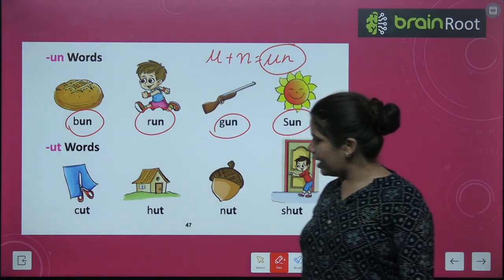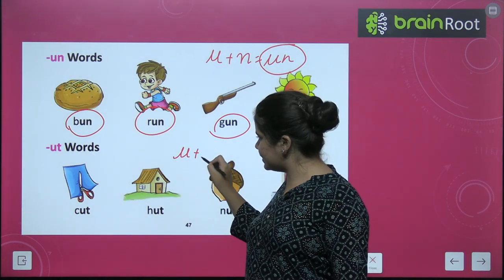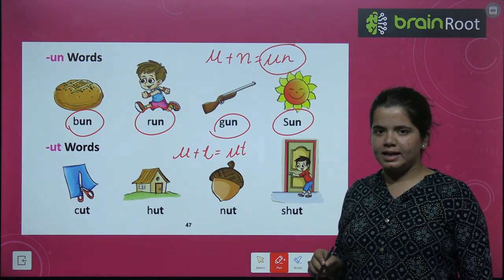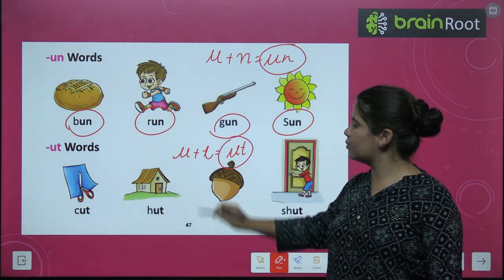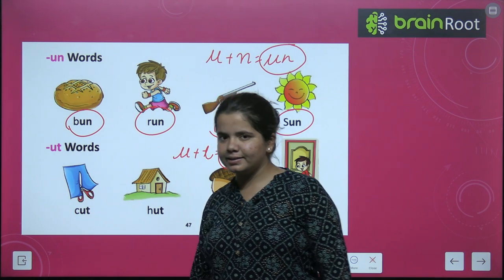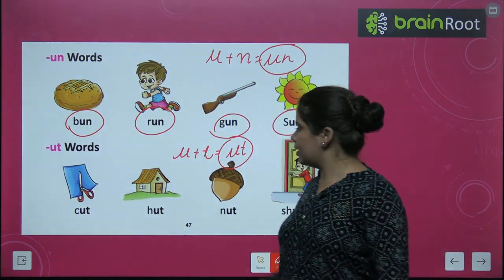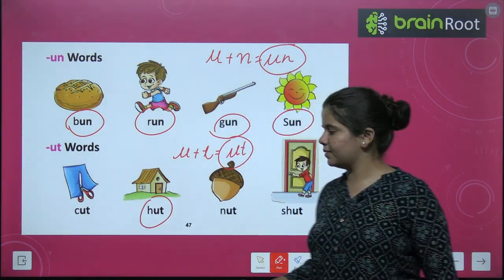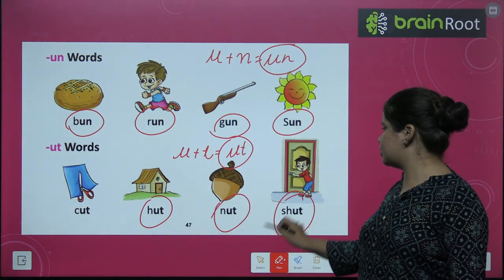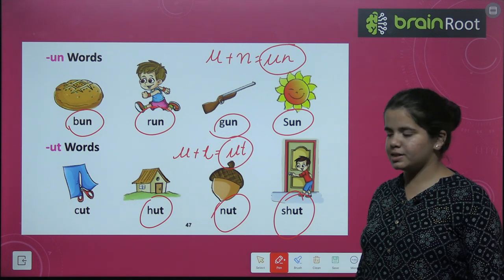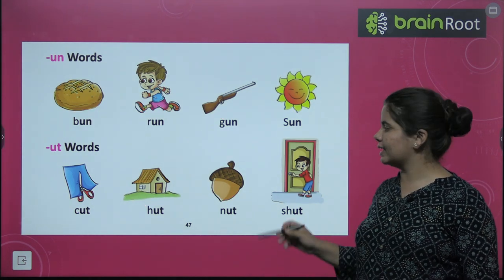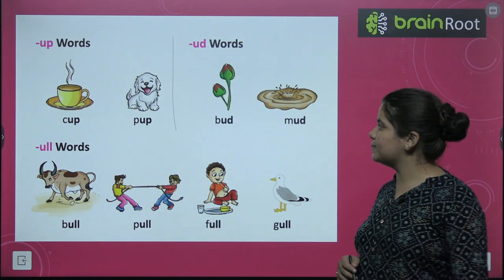Next we have U plus T, -ut words — where at the last you hear the -ut sound. C-U-T, cut. H-U-T, hut. N-U-T, nut. S-H-U-T, shut. So we have learned the -ut words as well.